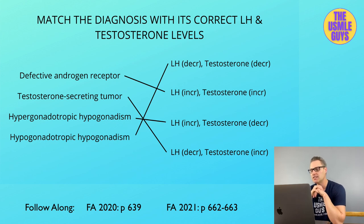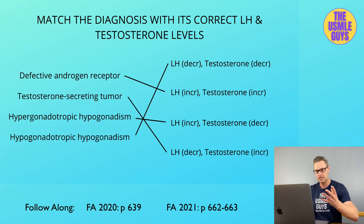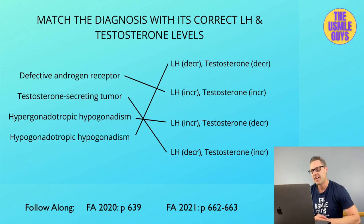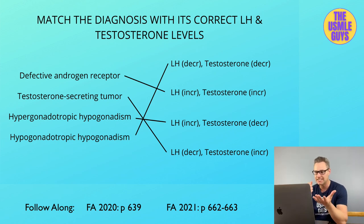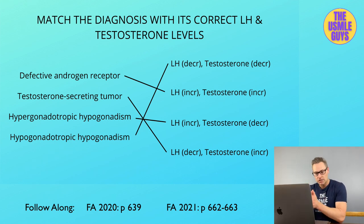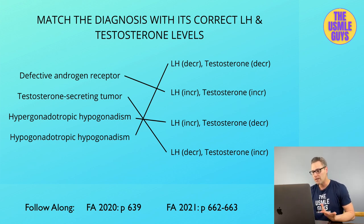5-alpha reductase deficiency — where 5-alpha reductase converts testosterone into DHT — is inherited in an autosomal recessive manner and only happens in males. As a result of not being able to convert testosterone to DHT, the male is born with ambiguous genitalia and does not masculinize until puberty, when increased testosterone causes growth. All hormone levels like testosterone, estrogen, and LH are going to be normal.